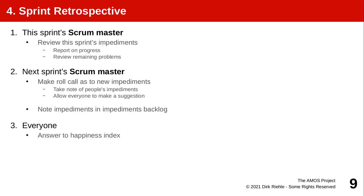And then the new scrum master of the next sprint — perhaps even the same person — makes a roll call as to new impediments. Impediments are problems of a social nature, not of a technical nature. So people problems — say, unavailability of your industry partner when you really need that information and they are not answering. That's an impediment. So the roll call means the scrum master goes around the table once, asks everyone individually, takes down the impediments, and has this cut out as their work for the upcoming sprint. You don't usually try to solve the impediments in the meeting; a few comments are sometimes okay, but don't start a lengthy discussion. This is the job of the scrum master as their work stream after the team meeting.